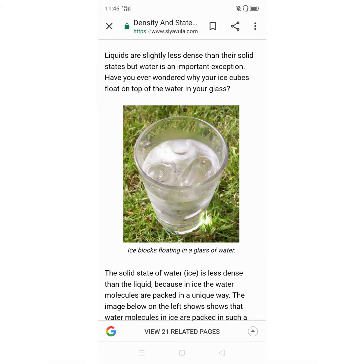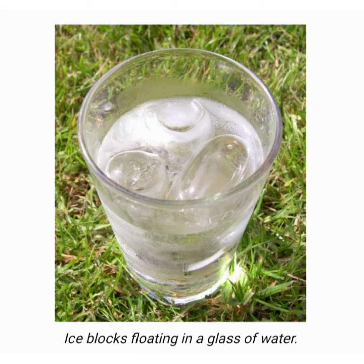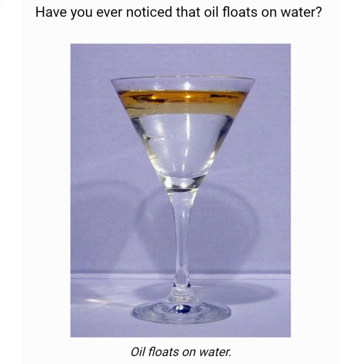Do all liquids have the same density? When two substances are in the same container but not mixed, they will form two layers. Water and ice also form two layers — which layer will be on top, the more dense or the less dense? For example, when you mix oil and water, the two materials will separate because they do not mix well. When they separate, the oil will always float on top. If a large amount of oil is poured into water, the oil will spread out and form a layer on the surface of the water.